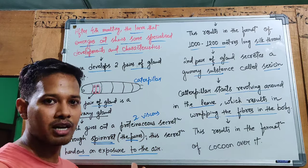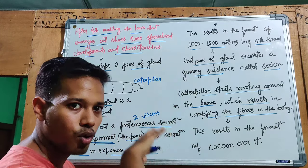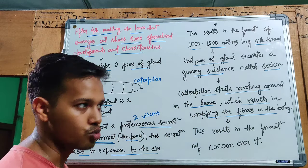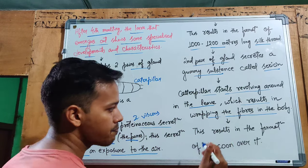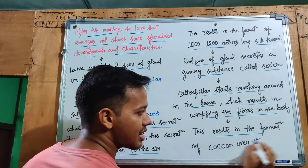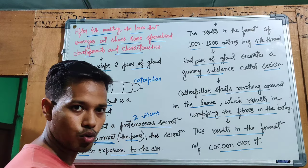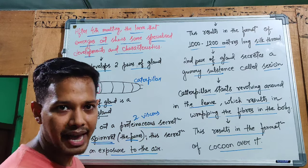The caterpillar continues to wrap the silk thread around its body, resulting in the formation of a cocoon over it. The cocoon is a protective fiber casing enclosing the caterpillar's body.